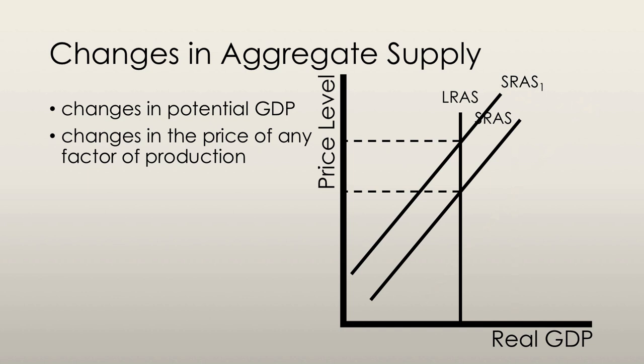Unemployment above the natural rate puts downward pressure on the money wage rate, and below the natural rate puts upward pressure on the money wage rate. An expected rise in inflation makes the money wage rate rise faster, and an expected fall in the inflation rate slows down the rate at which the money wage rate rises.